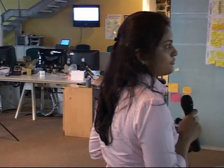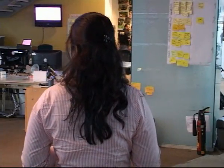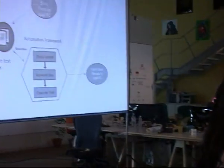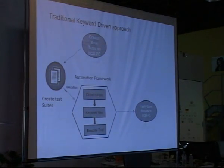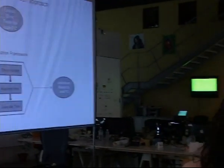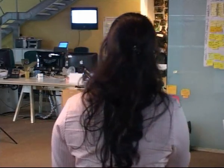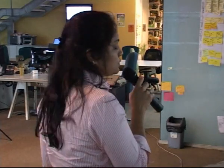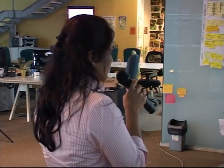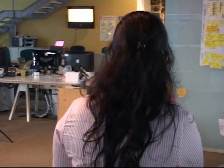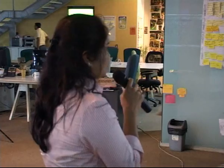So I will take a scenario of a traditional keyword-driven framework to explain this better. These are the steps in the traditional keyword-driven framework for test executions. The first step is to create test cases using keywords. The second step is to execute the framework — that is, to write the script for the framework in terms of keywords. And the last step is to verify the results that come through the execution.